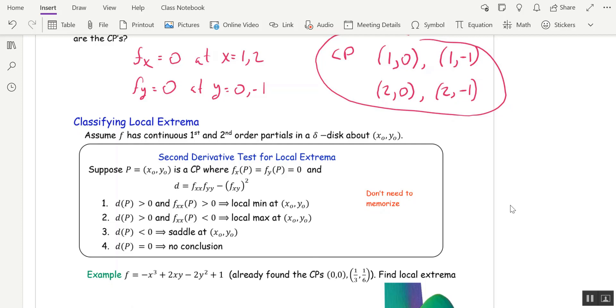Now let's look at the second derivative test. That will tell us whether we have a local max, a local min, or a saddle. Now the second derivative test only works for the type of critical point where the partials are 0. It does not work when the partials don't exist. So keep that in mind. So the first thing you're going to do is form the discriminant.